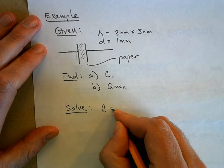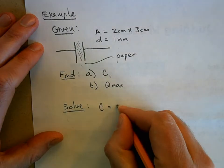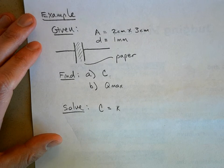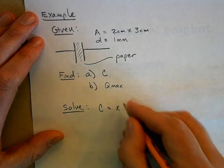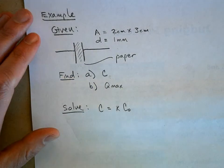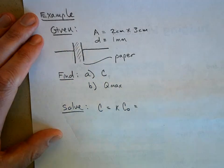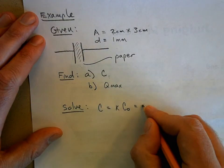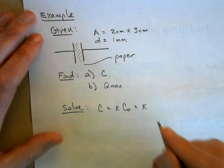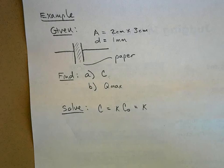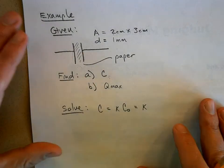The capacitance is equal to my dielectric constant kappa times C naught. Okay, and this is a parallel plate capacitor. So this is going to be kappa times, now what is the equation for the capacitance of a parallel plate capacitor?